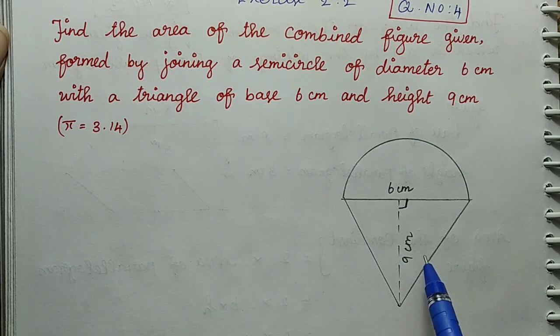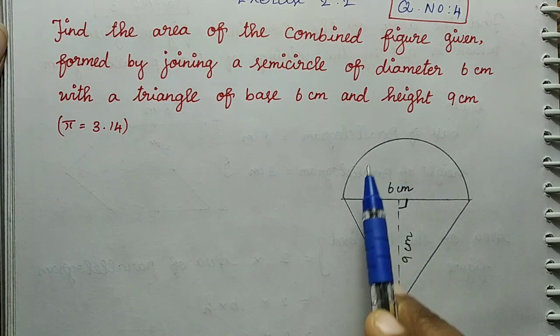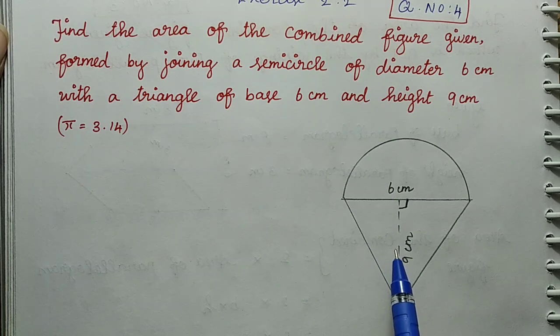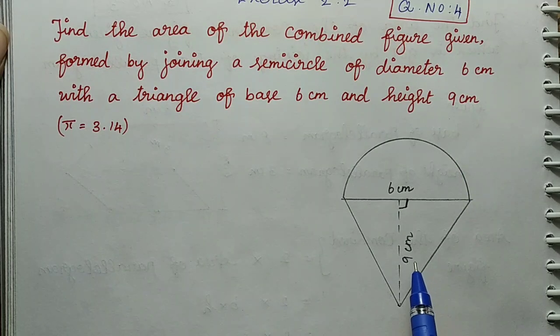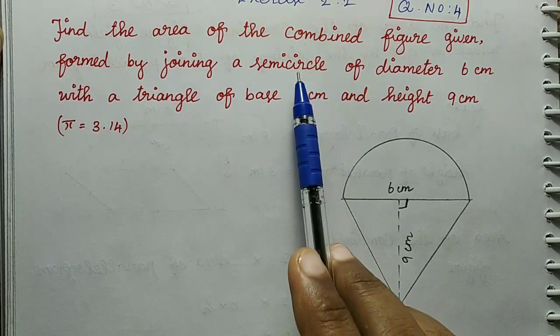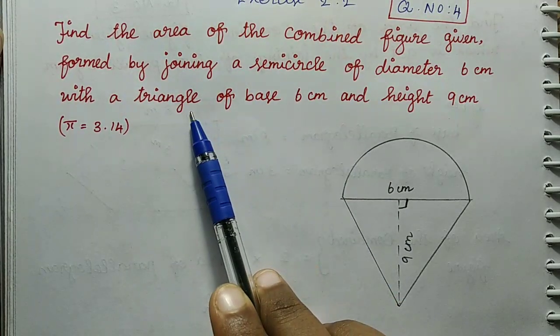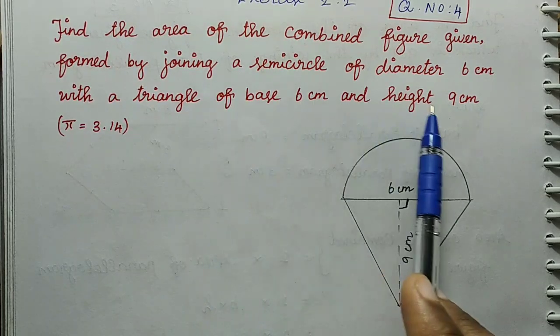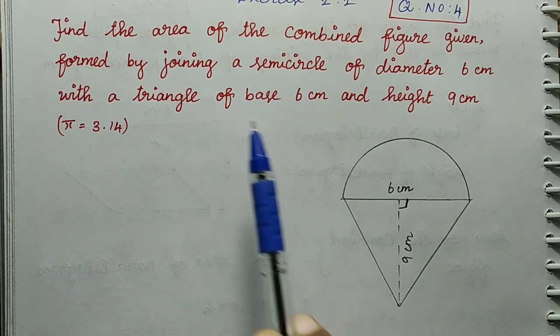So the area is found by adding the semicircle area and the triangle area. We can select these two to combine the diagram. If we add the two areas, we will get the total area of the combined form.